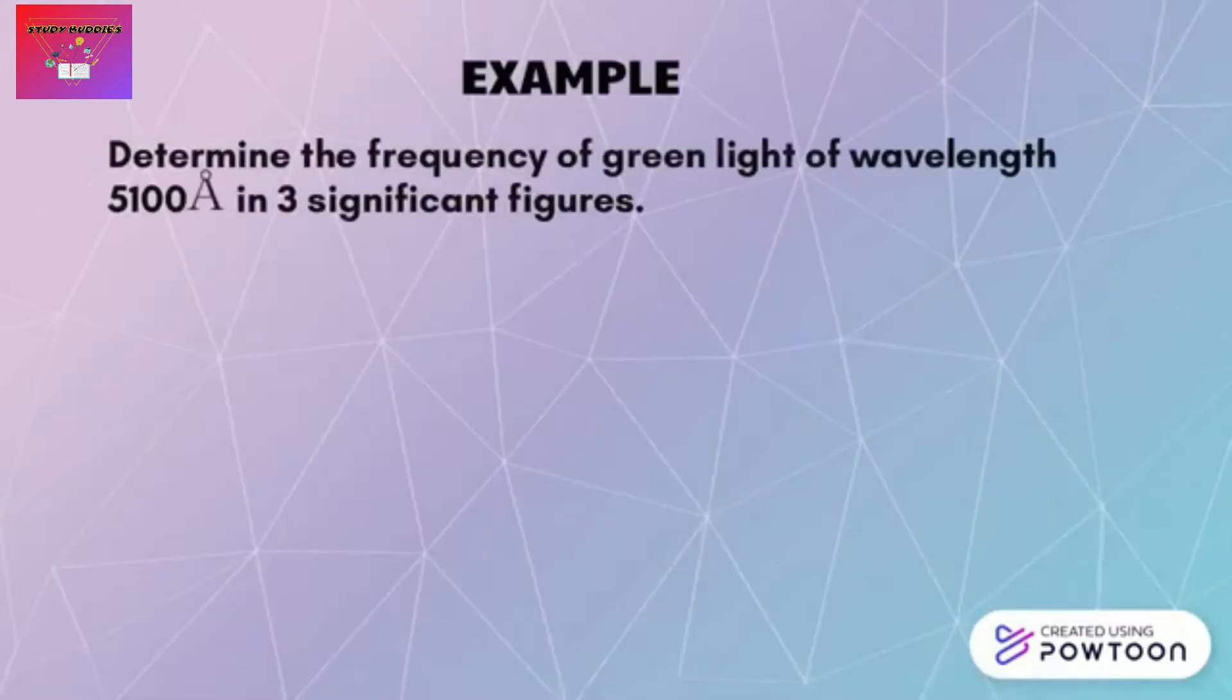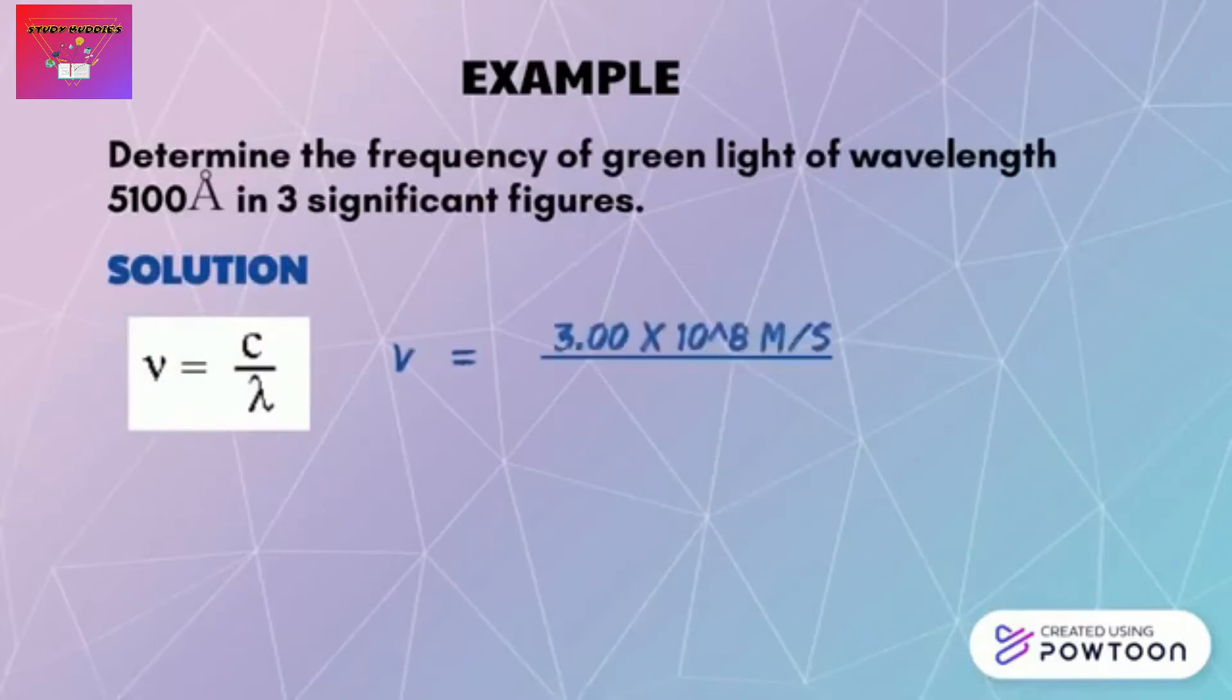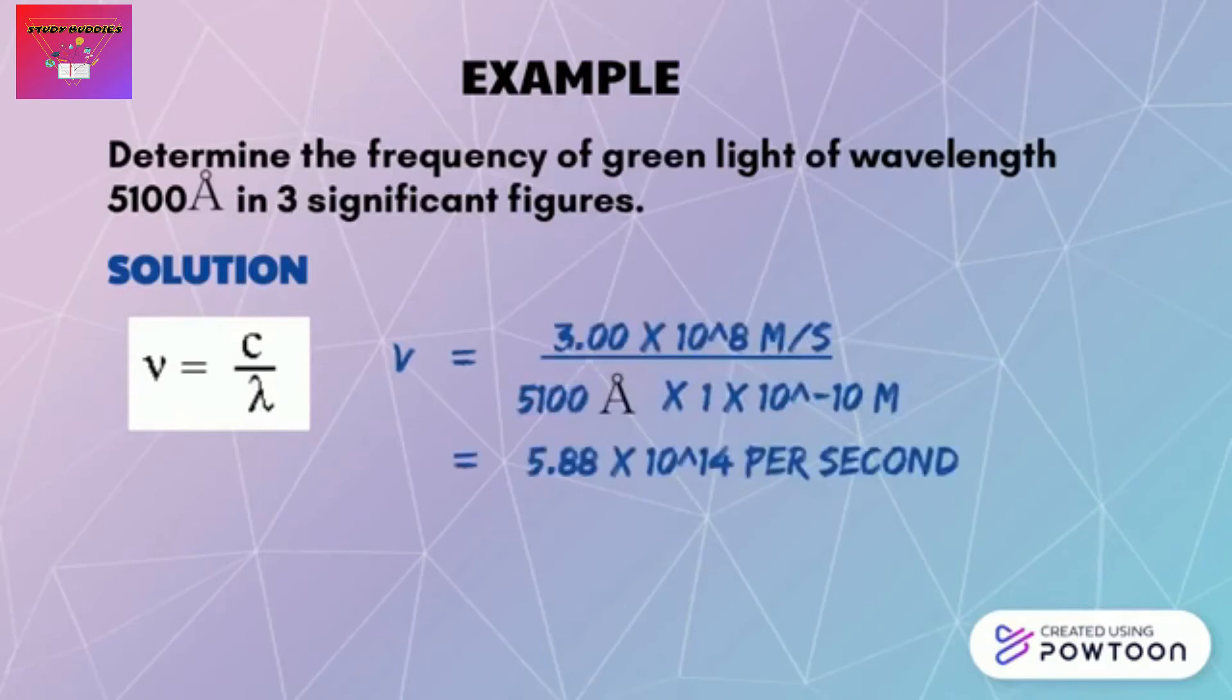For better understanding, let's solve a sample question. In this question we are required to determine the frequency of green light of wavelength 5100 Angstrom in three significant figures. We know that frequency equals velocity divided by wavelength. The wavelength is given in Angstrom, so we convert to meters by multiplying 5100 with 1 times 10 to the power of negative 10. When we solve the equation, we get 5.88 times 10 to the power of 14.